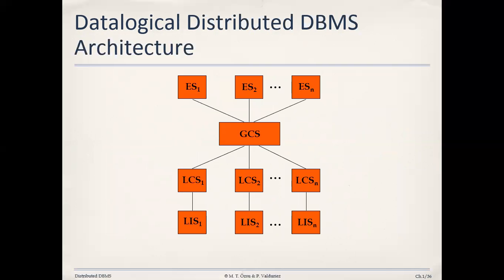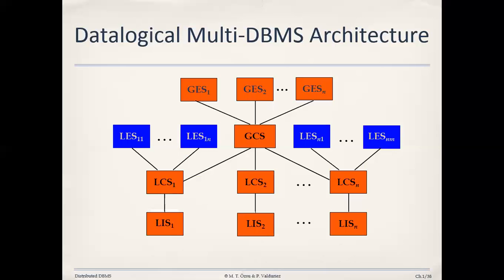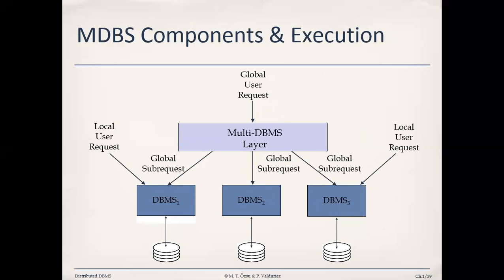Every request is considered a global request in that model. In the multi-DBMS architecture, sites have their own localized external schemas, meaning users at a particular site may have individual requirements and individual user views. That is the overview of the various architectures. We will go through the chapter in more detail and see which architecture is most suitable in which environment. Thank you.